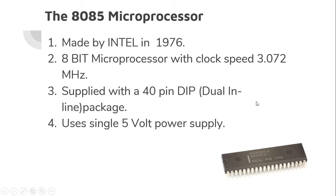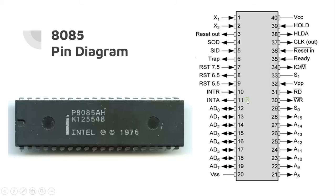So basically the 8085 was made by Intel in 1976 with a clock speed of 3.072 MHz. It's an 8-bit microprocessor and uses a 5-volt external power supply. This is the actual image of an 8085 microprocessor. As you can see the name of the manufacturer and the year is written over here.